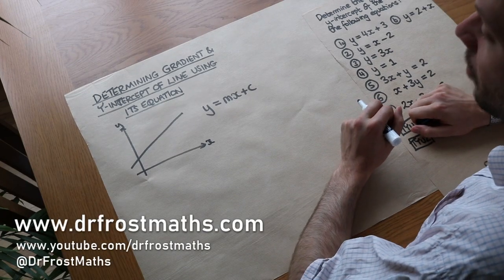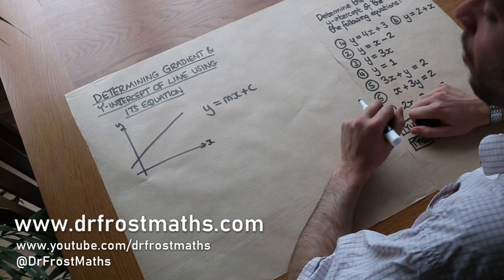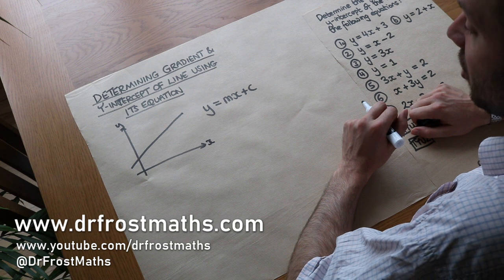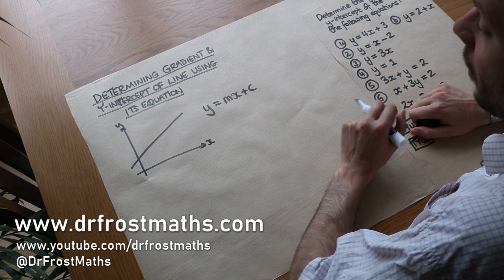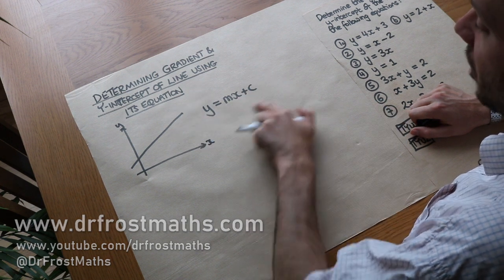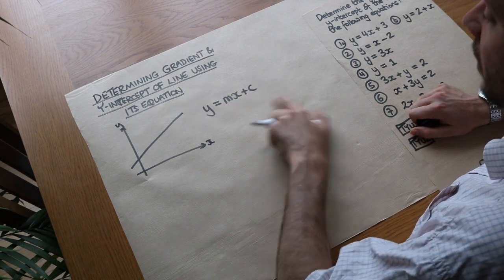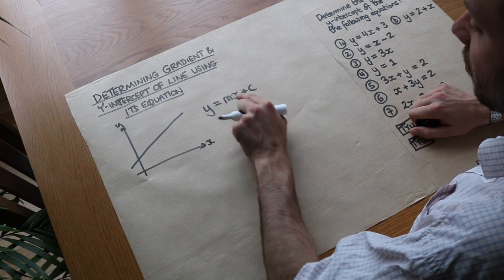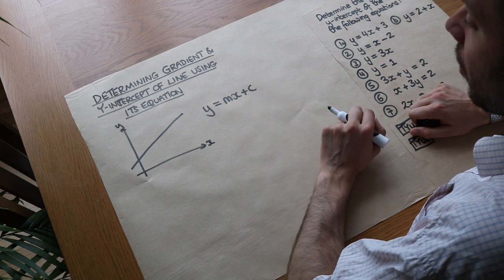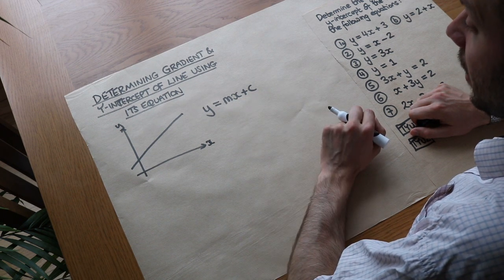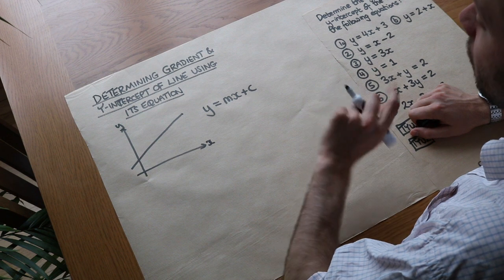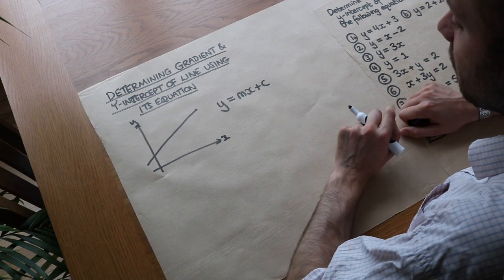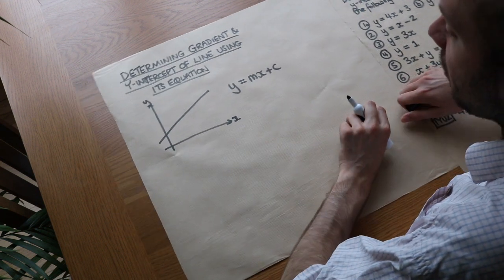Hello and welcome to this video on determining the gradient and y-intercept of a line using its equation. We're going to look at the general equation of a line and how we can use that equation to work out what its gradient is and what its y-intercept is. I'm hoping you've already viewed the video on what gradient means, but I will briefly recap it here.